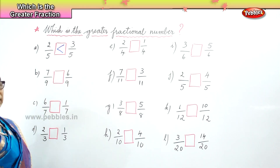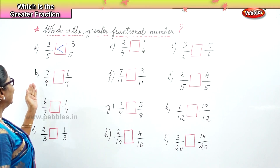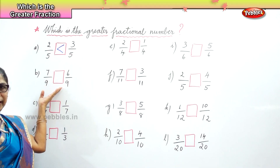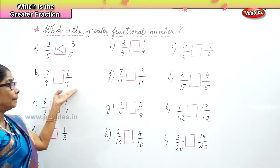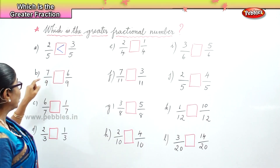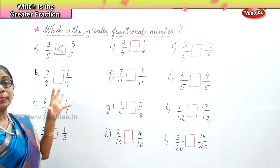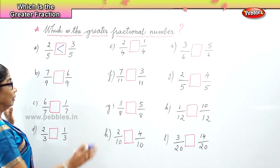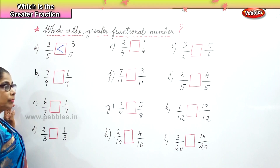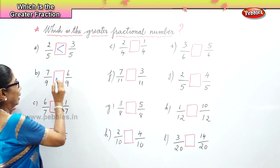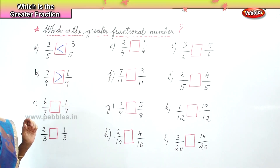Always remember, the bird has swallowed the greater number first. Now let us look at the second sum. We have nine as the denominator in both fractional numbers — seven parts out of nine, and six parts out of nine. We are looking at the numerators. The bigger the number in the numerator, the greater the fraction. So seven by nine is greater than six by nine.